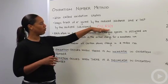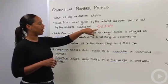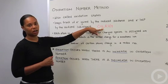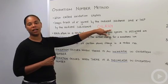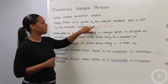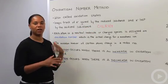I put OIL RIG here as a reminder that oxidation is loss of electrons and reduction is gain of electrons. This is always a handy tool to write down to help you keep track of what's happening.